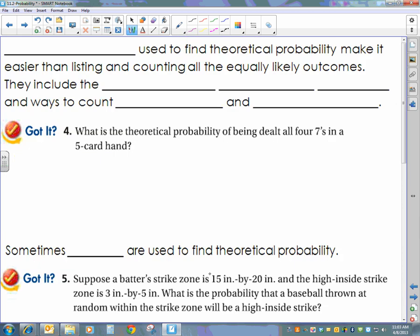Now, the next thing we have is to talk about something called combinatorics. Combinatorics basically is used to find theoretical probability, because that's easier than listing and counting all the equally likely outcomes. So combinatorics includes the fundamental counting principle that we've talked about earlier, and ways to count permutations and combinations.